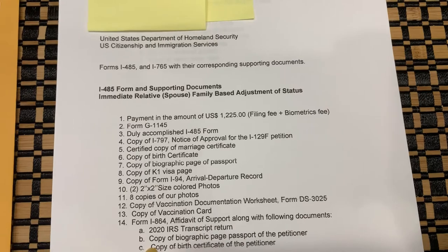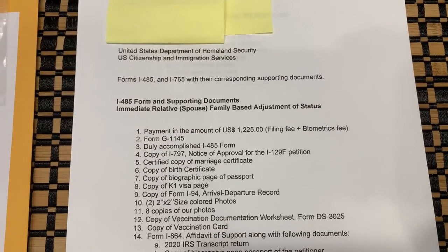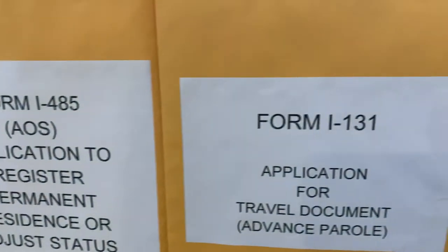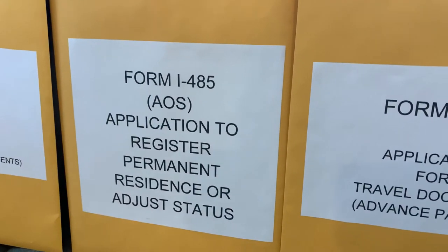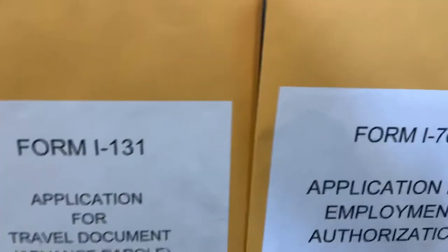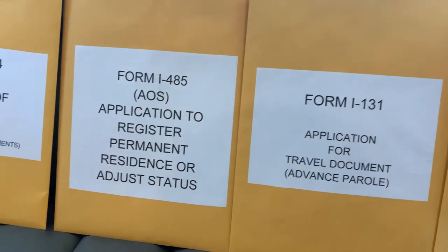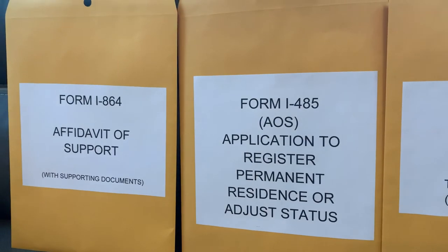That's everything in my Adjustment of Status packet. I included the Application for Employment Authorization and Form I-131 together with my Adjustment of Status. We're ready to mail it to USCIS. That's how I assembled my entire packet, and I already mailed it to USCIS. Within a few days I already received a text confirmation.